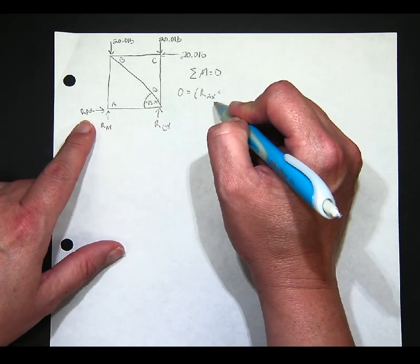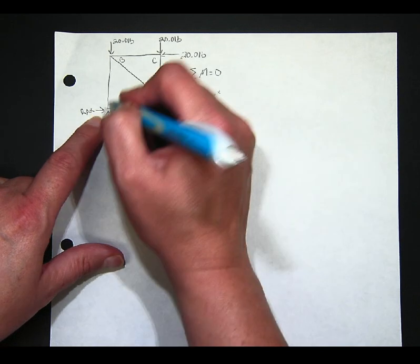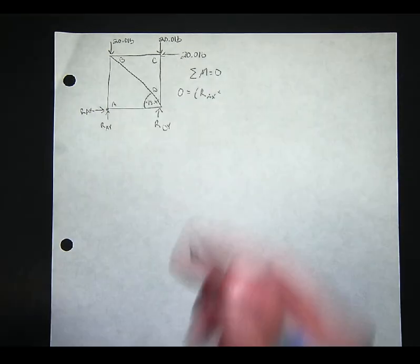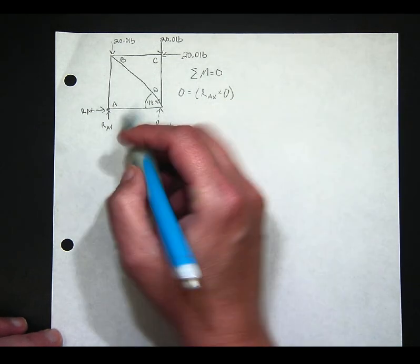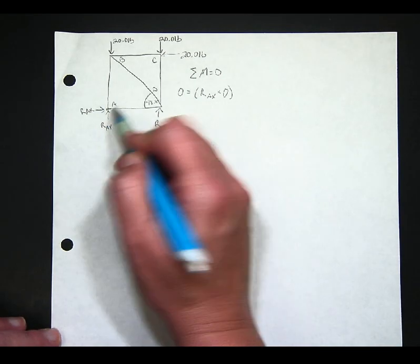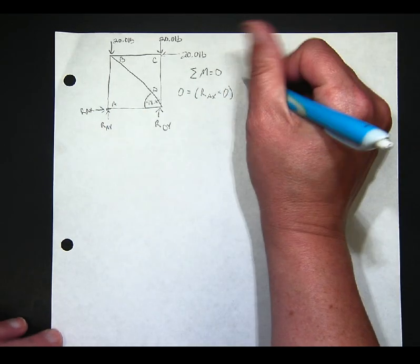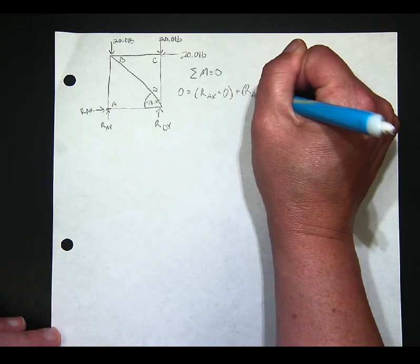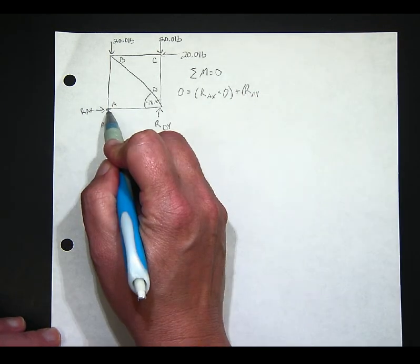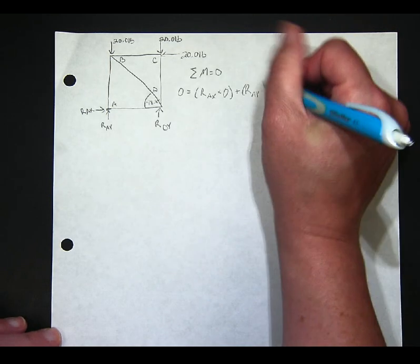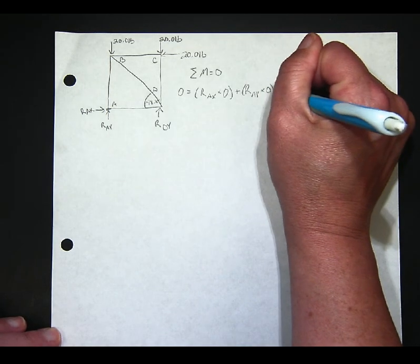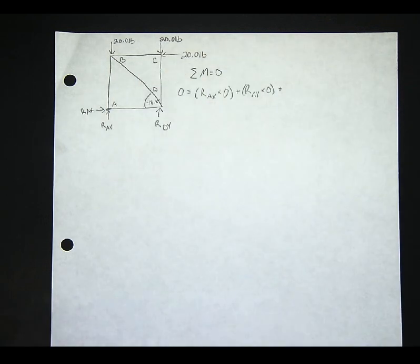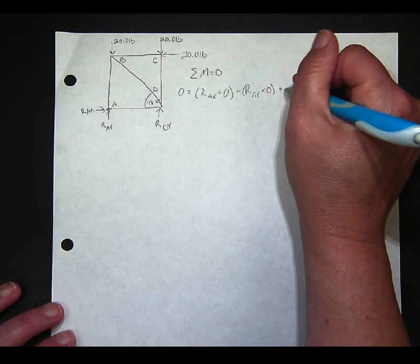RAX — the perpendicular distance from our pin — is zero, right here at that point. It's not going to cause rotation because there's no distance. Plus RAY — again, there's no distance from that point because it is at that same point. So it's times zero — no rotation going on.